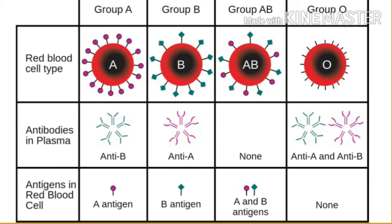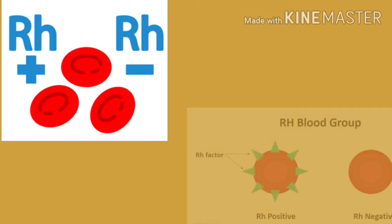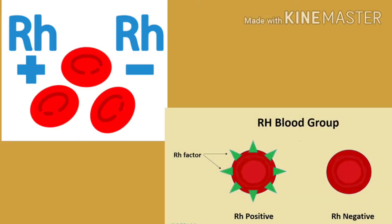A person with AB blood group has both antigen A and antigen B on the surface of RBCs, but antibodies are absent in the plasma. A person with blood group O doesn't have antigens on the surface of RBCs, but both antibody A and antibody B are present in the plasma. The Rhesus factor is an inherited protein found on the surface of RBCs.